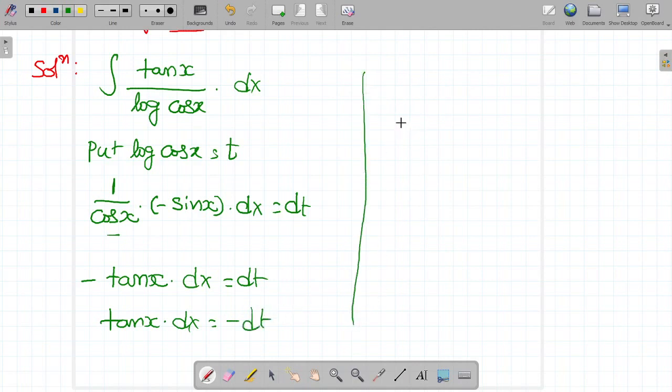Substitute in our problem. Integral tan x dx, replace with minus dt. Integral minus dt by log cos x, replace with t.